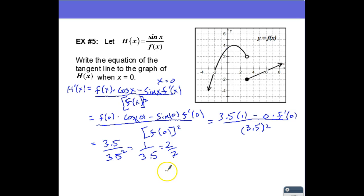So next, we might want to think about what our y-intercept would be now that we've got the slope. So h of 0 is going to be the sine of 0 divided by f of 0, which is the sine of 0 is 0 divided by f of 0 is 3.5, which is just equal to 0.